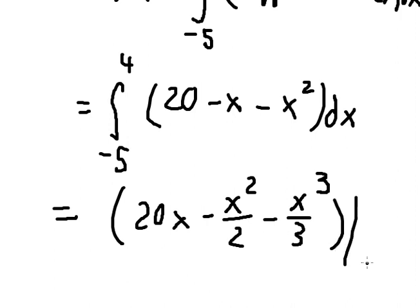We put the bounds from negative 5 to positive 4. After evaluating, we have 243 over 2. This is the end, thank you for watching.